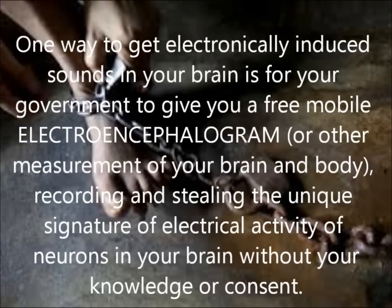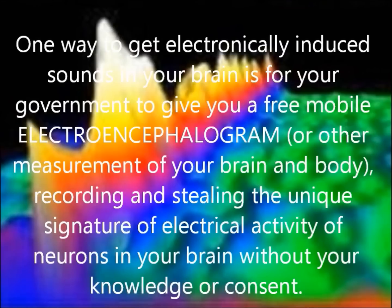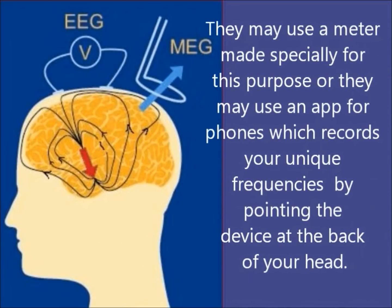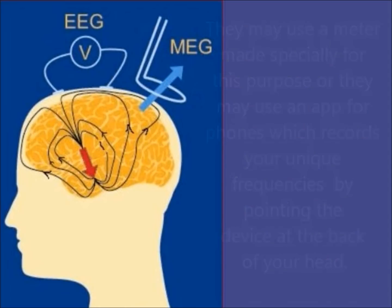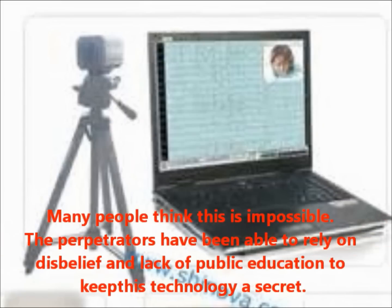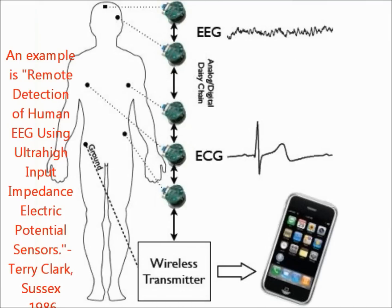One way to get electronically induced sounds in your brain is for your government to give you a free mobile electroencephalogram, recording and stealing the unique signature of electrical activity of neurons in your brain without your knowledge or consent. They may use a meter made specially for this purpose, or they may use an app for phones which records your unique frequencies by pointing the device at the back of your head. Many people think it's impossible, but the perpetrators have been able to rely on disbelief and a lack of public education to keep this technology a secret. An example is an article called Remote Detection of Human EEG Using Ultra-High Input Impedance Electric Potential Sensors, written by Terry Clark in Sussex in 1986.